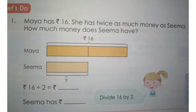Listen to the next problem. Maya has Rs. 16. She has twice as much money as Sima. How much money does Sima have? Maya has Rs. 16. How much money does Sima have? We don't know that. A clue is given to find the answer: she has twice as much money as Sima.